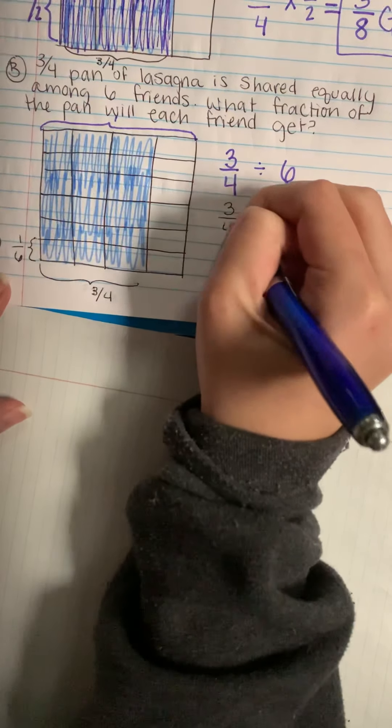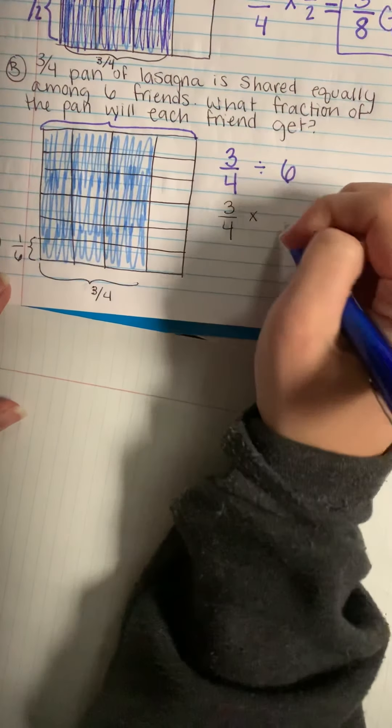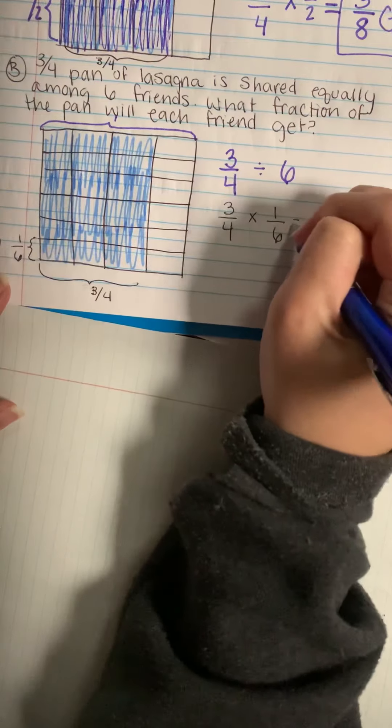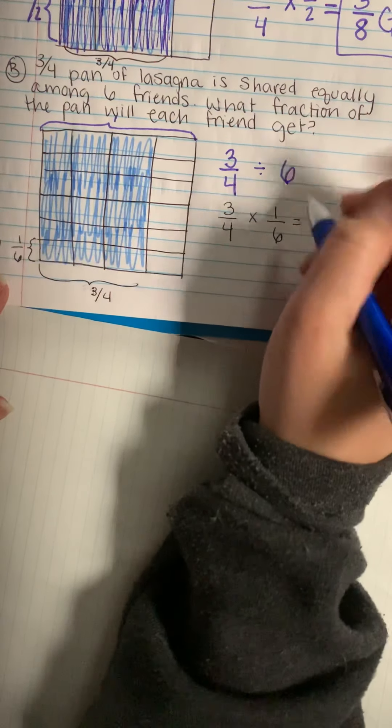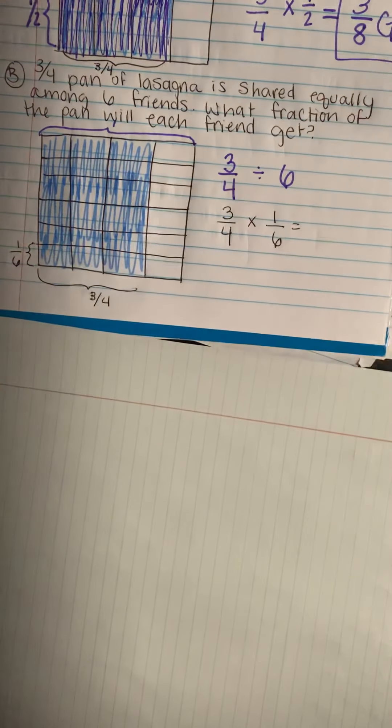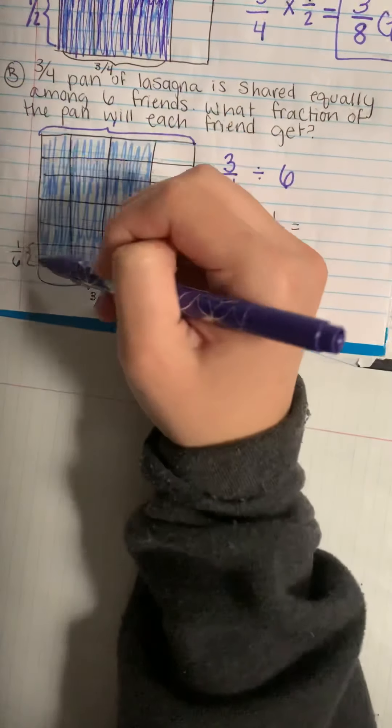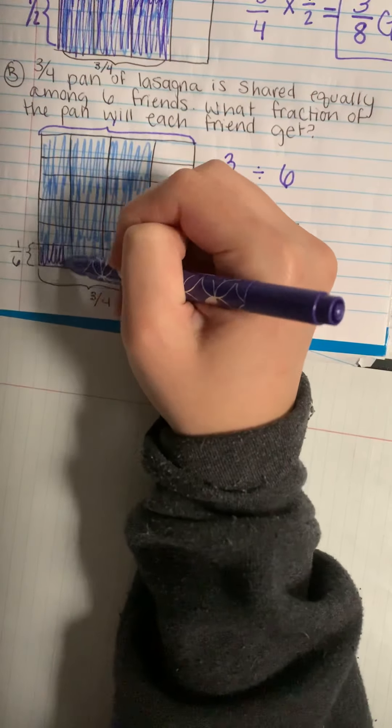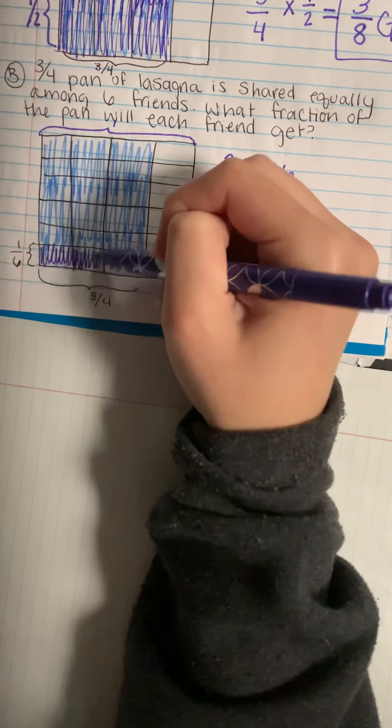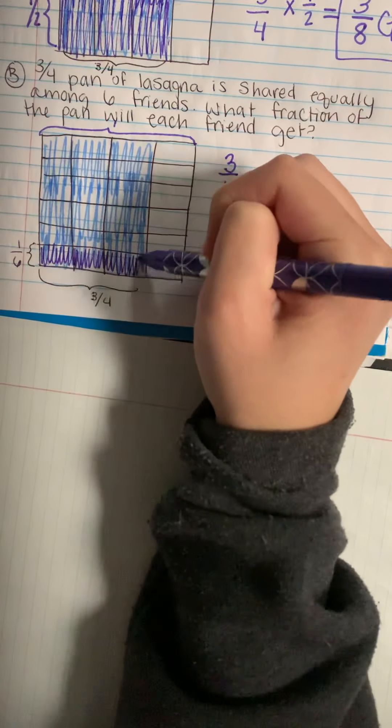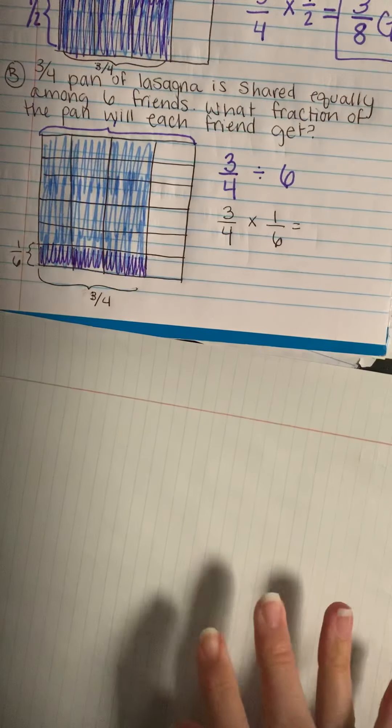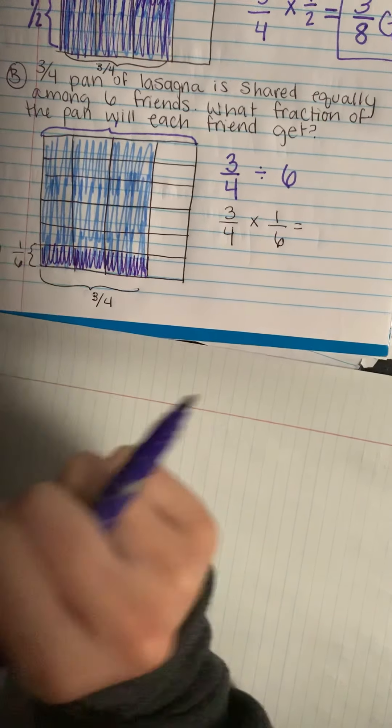And I can show that one-sixth because really when we're dividing and we're doing keep change flip, this is like we're multiplying by one-sixth when we're really dividing by six. So I have to show my one-sixth that I'm zooming in on because I want to know how much each friend will get or one friend if they're all getting it equally. I can zoom in on one out of the six friends.